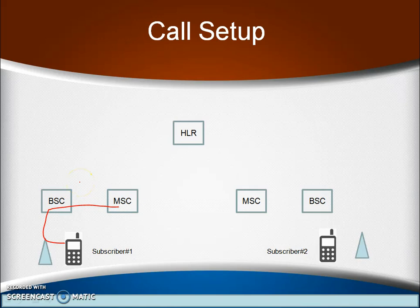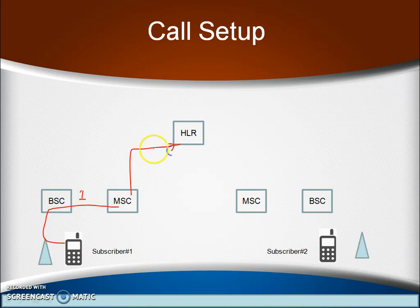The red color shows that signaling information is established between mobile switching center one and the mobile station. Once MSC1 receives the MSISDN number, it performs a pre-analysis to find the type of call. As the MSISDN number contains the country code and the network operator code, this country code tells that subscriber two is from the same country. That is why MSC1 sends a request to its HLR to obtain the IMSI number of the dialed subscriber.